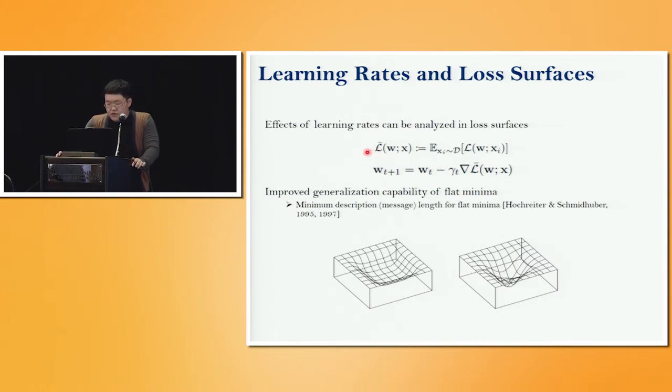Learning rates of gradient descent control the behavior of learning on loss surfaces. Then what is the desired behavior of learning on loss surfaces to achieve generalization? We claim that discovering flatter loss surface is very important to achieve generalization.